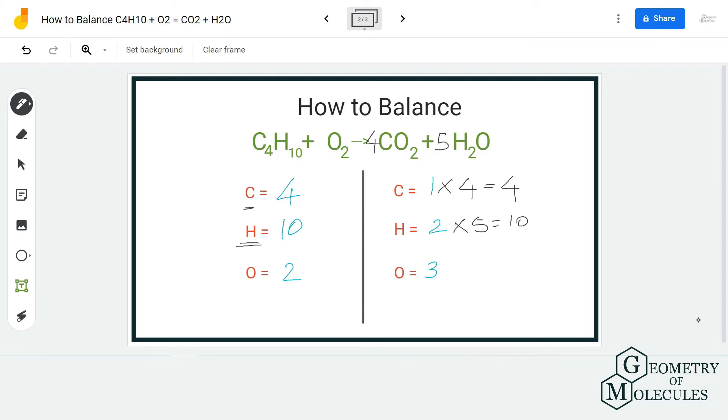Now this will also change the number of atoms for oxygen and we can calculate that. So on product side we have 8 plus 5, that is 13 oxygen atoms, and for reactant side we only have 2. Now to balance it off I have to actually multiply this by 13 by 2 as it will cancel out this 2 and there will be 13 oxygen atoms.